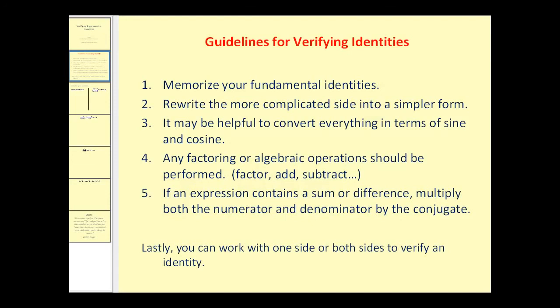Number four, any factoring or algebraic operation should be performed — for example, adding, subtracting, multiplying. Number five, if an expression contains a sum or difference, multiply both the numerator and denominator by the conjugate. These are just guidelines, so the best way to get good at verifying identities is to practice. Think of it as a puzzle that you're trying to solve, and hopefully you'll have some fun along the way.